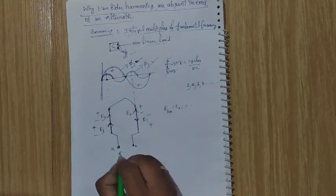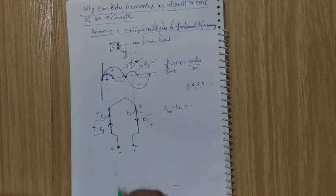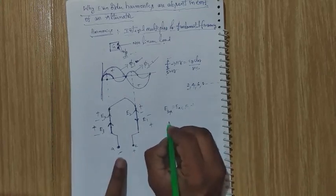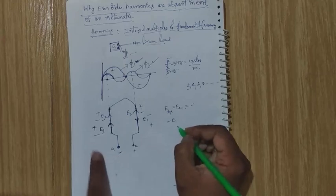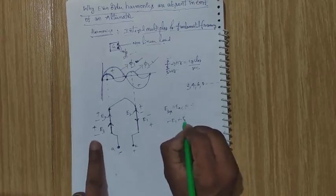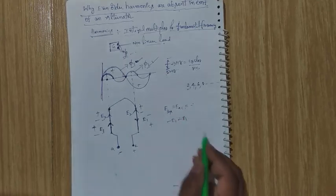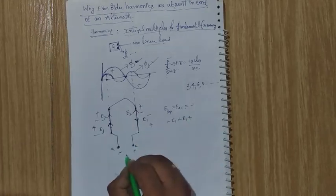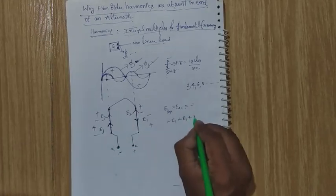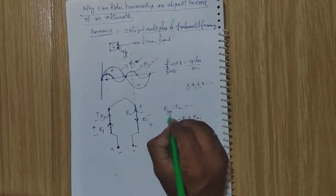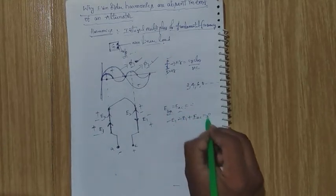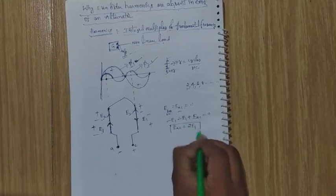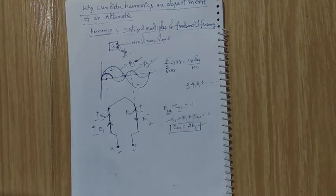Applying KVL for the fundamental flux wave: minus e₁ plus minus e₁ equals zero, giving the resultant EMF across terminals AC as eac = 2×e₁. So the fundamental EMFs from both coil sides add together.